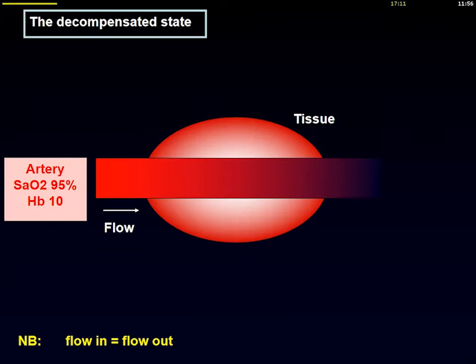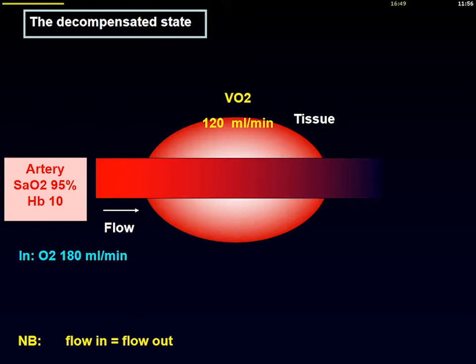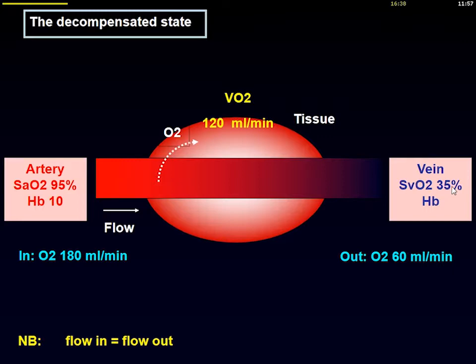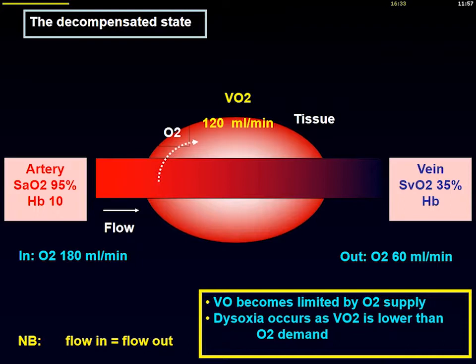But there is a situation where the state becomes totally decompensated. At this stage, the amount of oxygen entering the piece of tissue becomes too limited and the cells try to consume the oxygen they need but unfortunately it is not enough. There will be a decrease in oxygen consumption at that stage, and VO2 becomes limited by oxygen supply — which characterizes shock — and dysoxia occurs as VO2 is lower than oxygen demand.